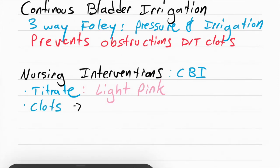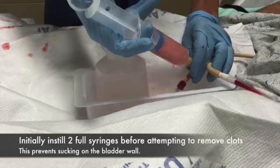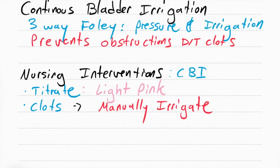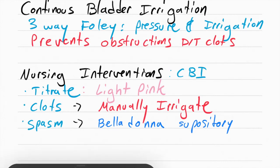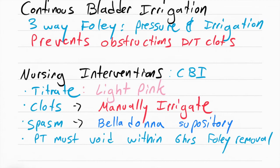If there's a clot, what you're going to see is no urine flowing out because there's a clot in the way. What you want to do if there's a clot is manually irrigate it. That means you're going to get a large syringe, fill it up with water or saline, push it into where the irrigation bag goes, draw it back out, and repeat that process many times until you get all the clots out. The other thing that can happen is a spasm. If spasms happen, you want to give a drug called belladonna. It's a suppository that's given to stop spasms. Just like any other foley, make sure the patient voids within six hours of the foley being removed.